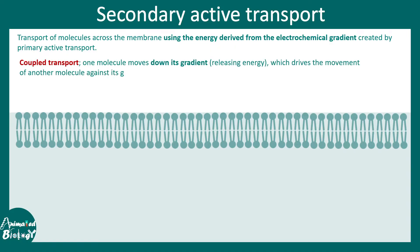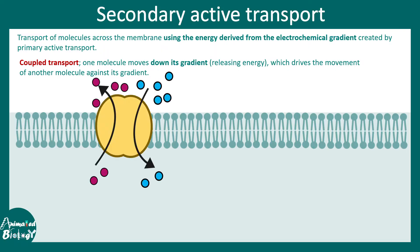Secondary active transport is a coupled transport — one molecule moves down the gradient and one molecule moves up the gradient. Here we can see there are two types of molecules, one depicted in pink and one depicted in blue. The blue molecule is moving down the concentration gradient whereas the pink molecule is moving up the concentration gradient. Notice that the movement of ions is happening in opposite directions, so one can also think of this as an antiport.